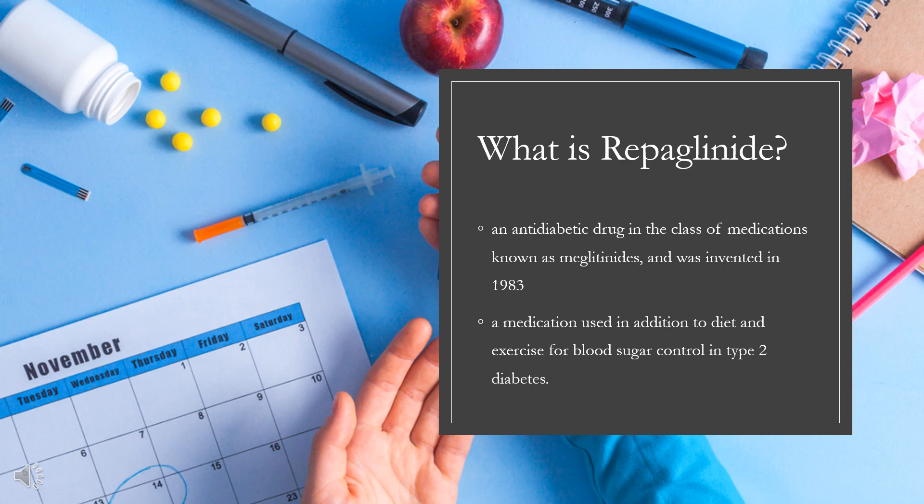It is sold by Novo Nordisk under the brand name Prandin in the United States, Gluconorm in Canada, Surepost in Japan, Repaglinide in Egypt, and NovoNorm elsewhere. In Japan, it is produced by Dainippon Sumitomo Pharma.